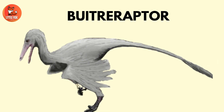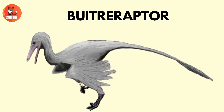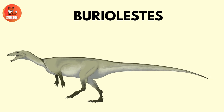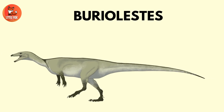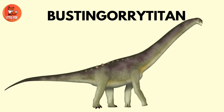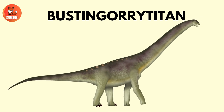Number 29: Patriopter. Number 30: Baryal-Lestes. Number 31: Bustin-Goriditon.